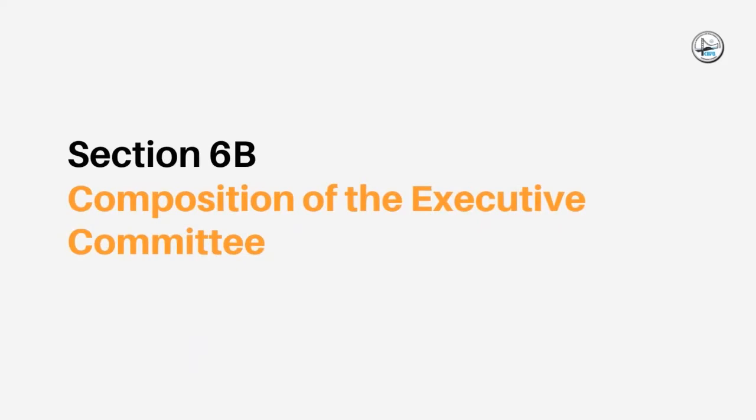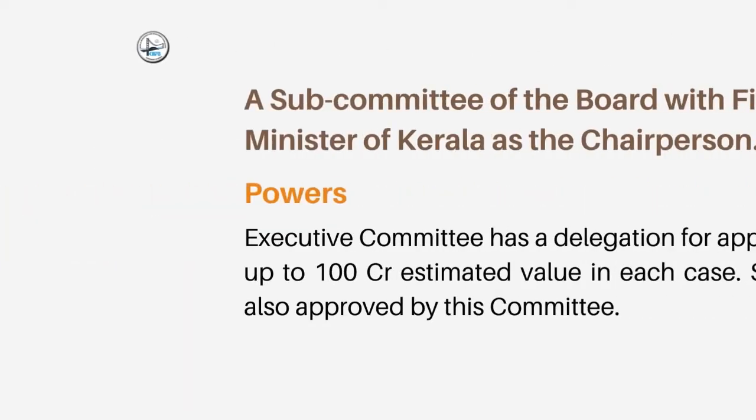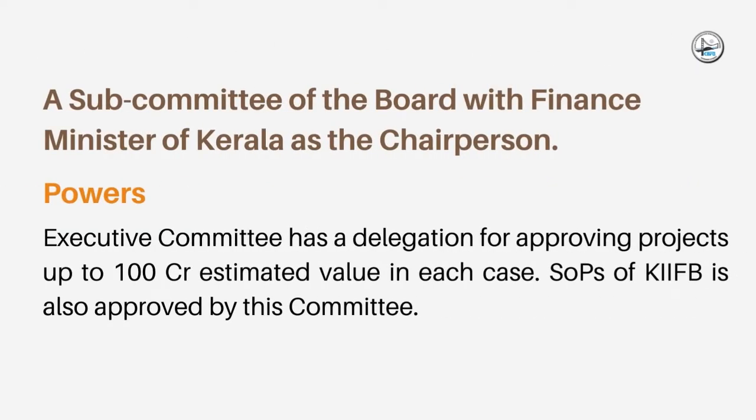Section 6.B. details the composition of the Executive Committee. It is a subcommittee of the board with the Finance Minister of Kerala as the Chairperson. The Executive Committee has the power to approve projects up to Rs. 100 crore estimated value. It also approves the SOPs of KIF-B.